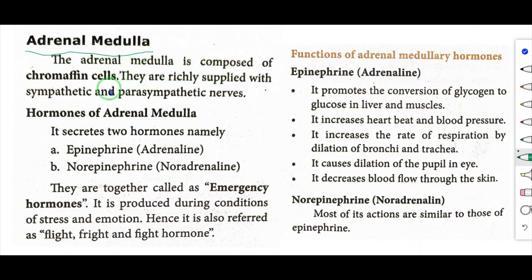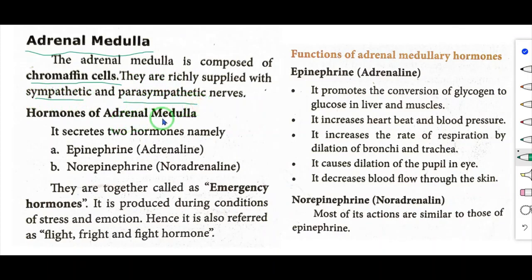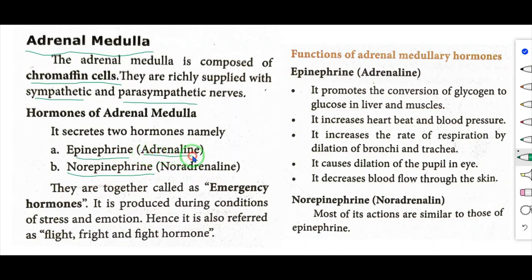The adrenal medulla is composed of chromaffin cells and is richly supplied with sympathetic and parasympathetic nerves. It secretes two hormones: epinephrine and norepinephrine. Epinephrine is also known as adrenaline, and norepinephrine is also known as noradrenaline.